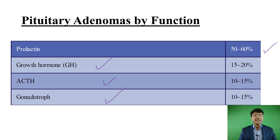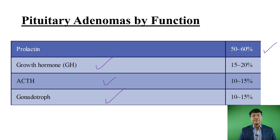However, if the question is asked what is the most common pituitary adenoma overall, the answer will be non-secretory adenoma. But if the question asks what is the most common secretory adenoma, then it will be prolactinoma.